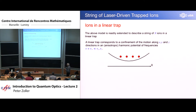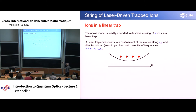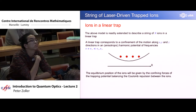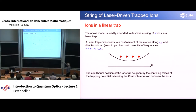This will be a nonlinear problem initially, but for small oscillations will be linear. A linear trap corresponds to confinement of the motion along X, Y and Z. We want this inequality where the X direction is much softer than the much stiffer Y and Z direction. The equilibrium positions of the ions will be given by the confining forces, which is a big harmonic oscillator, which is somehow soft, and the trapping potential balancing the Coulomb repulsion between the ions.